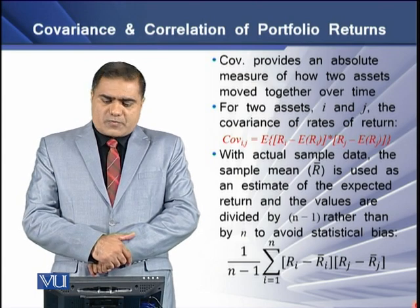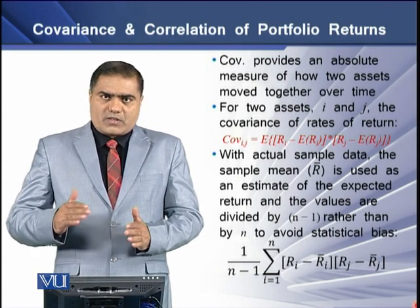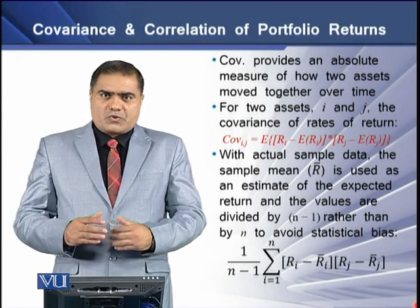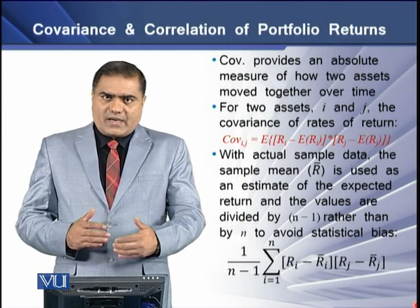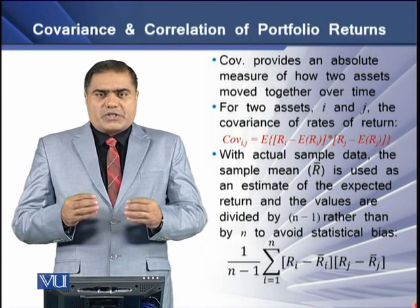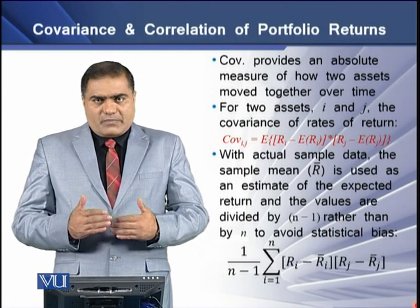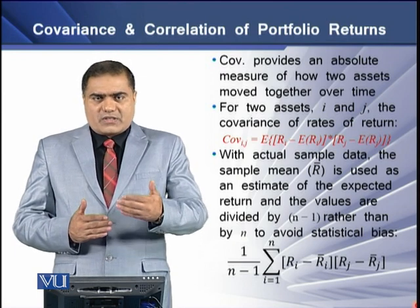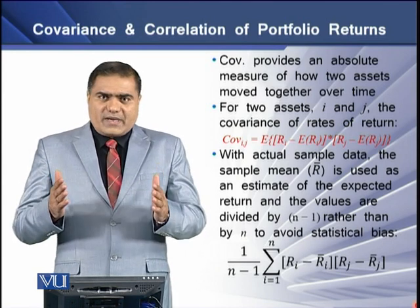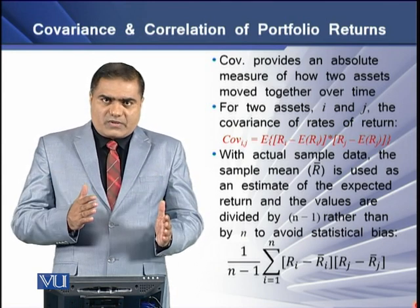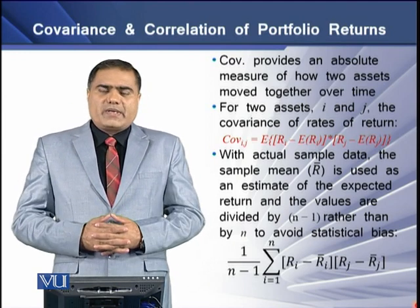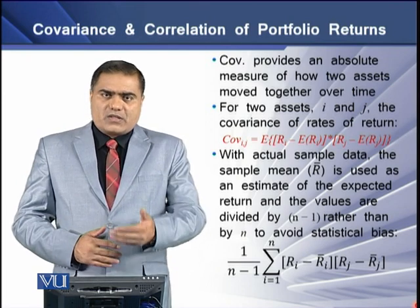Covariance provides an absolute measure of how two assets move together over a certain period of time. To determine covariance between two assets, for example asset I and asset J, we have a certain formula. We determine the individual mean deviation of returns for each asset, then we multiply the mean deviation of one asset with the mean deviation of the other asset, and the sum of these multiplications is termed as the covariance.